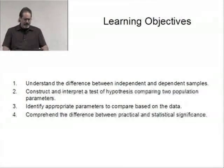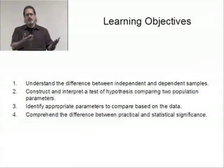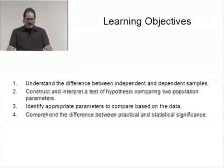The learning objectives: We want to understand the difference between independent and dependent samples. That's very key for determining the type of analysis you're going to do, particularly if you're dealing with the mean, the median, or the variances. We want to be able to construct and interpret a test of hypothesis comparing two population parameters. Identify appropriate parameters to compare based on the data, and we've been doing that all along. We take a look at the data, collect some data, and say is it appropriate to talk about the mean or do we need to switch gears and go to the median. It's the same idea here. And last, we want to comprehend the difference between practical and statistical significance because there's definitely a difference.